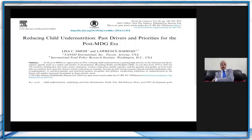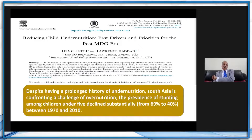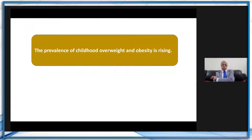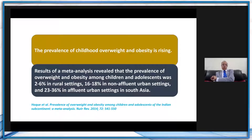Regarding reducing child undernutrition — the past drivers and priorities for the post-MDG, that is, Millennium Development Goal era — after 2015, a publication stated that despite having a prolonged history of undernutrition, South Asia is confronting a challenge of overnutrition. The prevalence of stunting among children under five declined substantially from 69% to 40% between 1970 and 2010. On the other hand, the prevalence of child overweight and obesity is rising. A meta-analysis revealed that the prevalence of overweight and obesity among children and adolescents was 2% to 6% in rural settings, 16% to 18% in non-affluent urban settings, and 23% to 36% in affluent urban settings in South Asia.